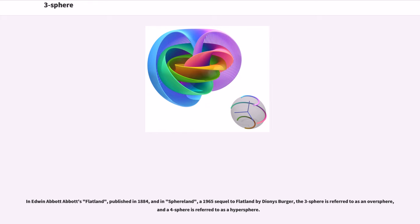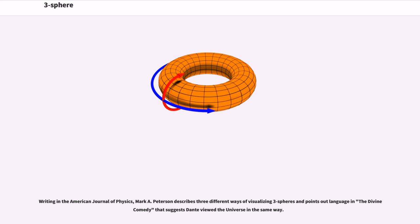In Edwin Abbott Abbott's Flatland, published in 1884, and in Sphereland, a 1965 sequel to Flatland by Dionys Burger, the three-sphere is referred to as an oversphere, and a four-sphere is referred to as a hypersphere. Writing in the American Journal of Physics, Mark A. Peterson describes three different ways of visualizing three spheres and points out language in the Divine Comedy that suggests Dante viewed the universe in the same way.